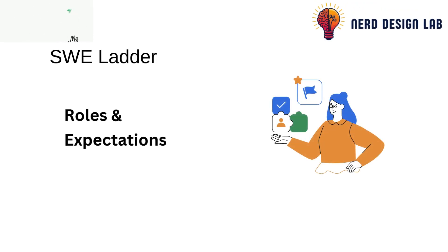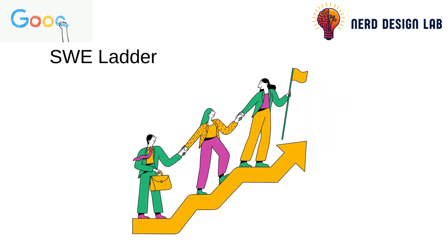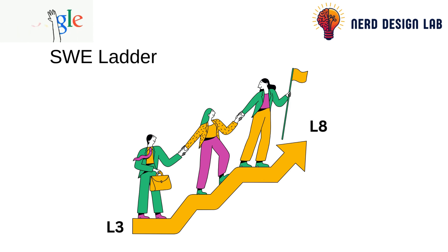The software engineer ladder at Google is a framework that defines roles and expectations for engineers. It's divided into levels, starting at L3 for entry-level roles, all the way up to L8 and beyond for distinguished engineers. Each level represents increased responsibility, technical expertise, and leadership skills.